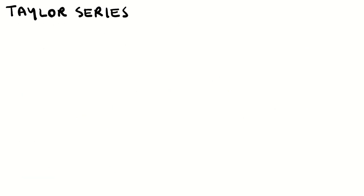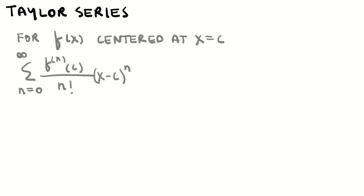We also need to know the Taylor series formula for a given function around a given x value. The Taylor series for f centered at x = c is the sum from n = 0 to infinity of f's n-th derivative evaluated at c, divided by n factorial, multiplied by (x − c)^n.